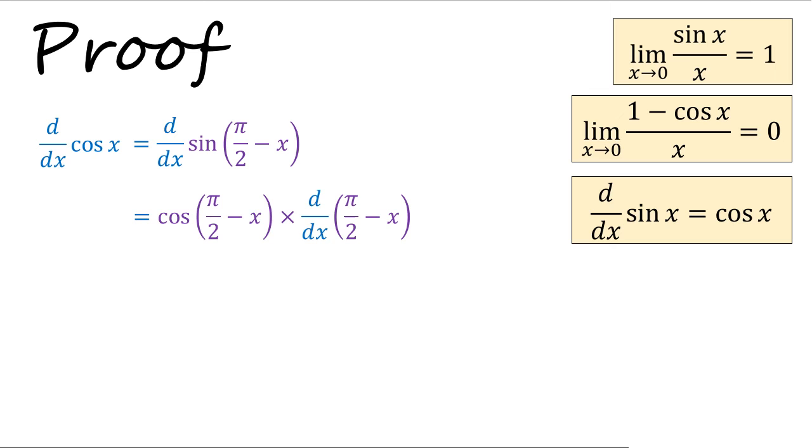So let's look at this. How can we simplify? Well, cosine π/2 minus x will just become sine of x using the complementary angle formula again. And the derivative of π/2 minus x is going to give us a negative sine. So the final result is going to be negative sine x. So let's park this result here.